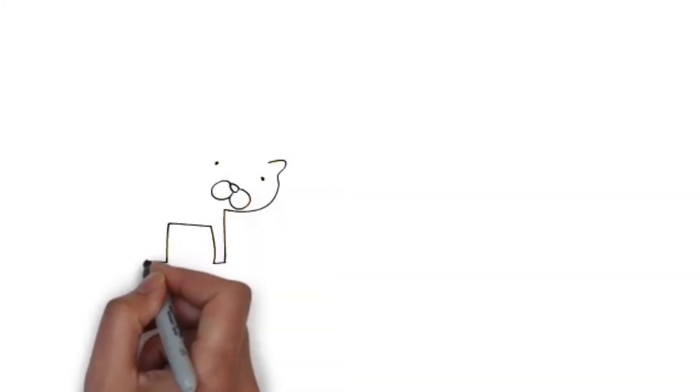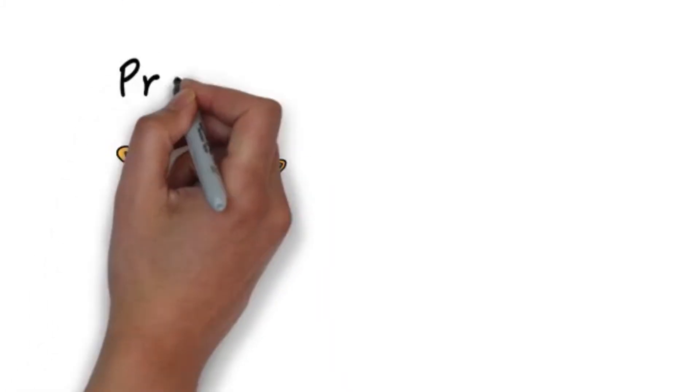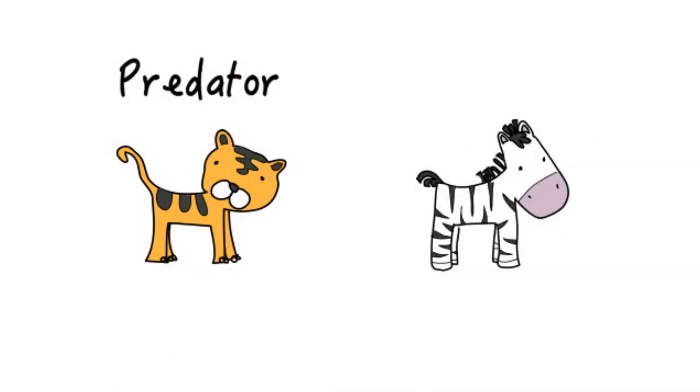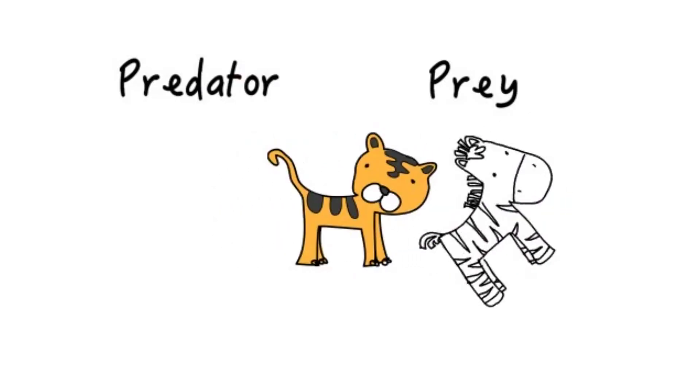An animal that hunts down another in order to survive is called a predator. The hunted animal is called prey. So you always say that a predator hunts its prey.